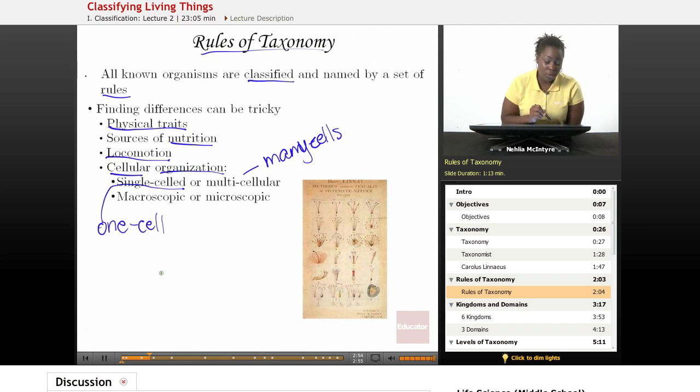Also, are these organisms macroscopic or microscopic? Macroscopic meaning you can see them with the naked eye. You do not need an instrument or a tool to see them. However, microscopic organisms, you'll need something like a microscope, or some type of tool to help you see that organism.